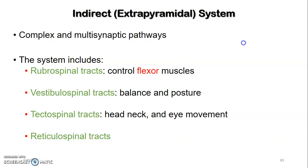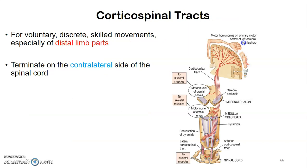Indirect systems are complex and multi-synaptic pathways. We have rubrospinal, which controls flexor muscles. Vestibulospinal tracts are for balance and posture. Tectospinal tracts originate from the tectum — from the superior colliculi to the spinal cord — and control head and neck movements in response to visual reflexes. Reticulospinal tracts run from the reticular formation to the spinal cord.